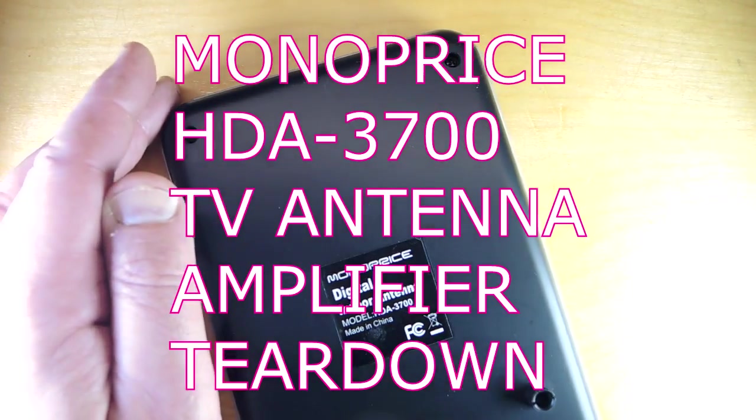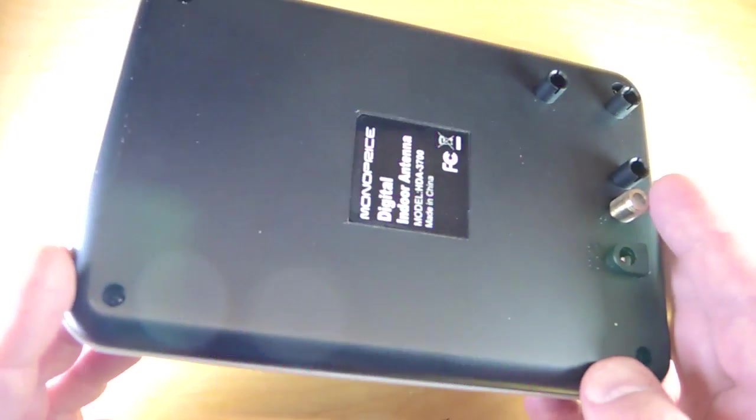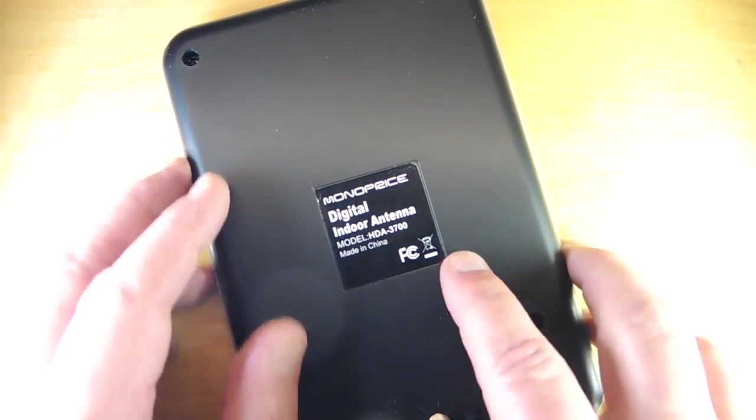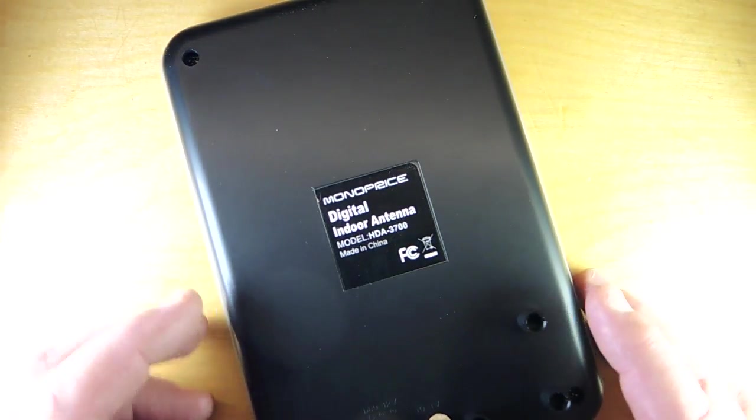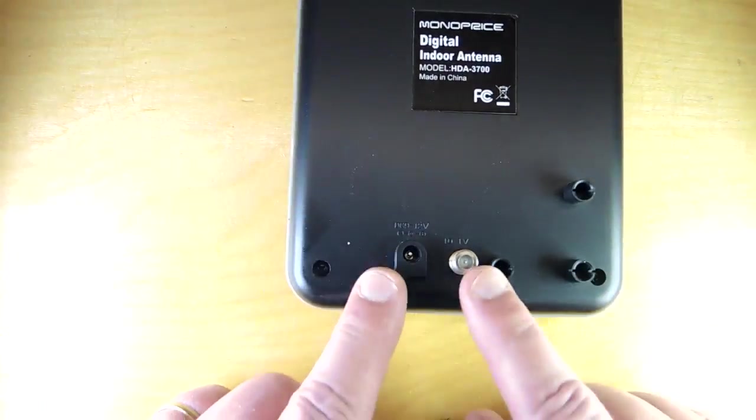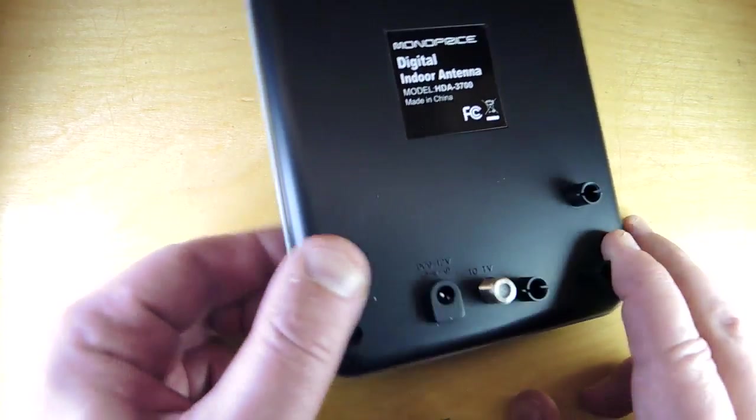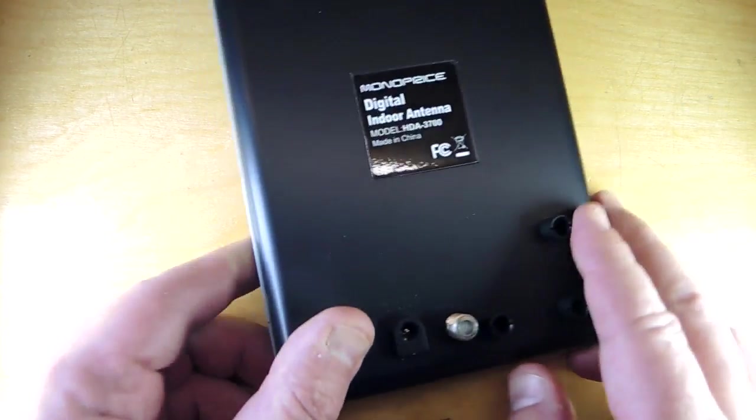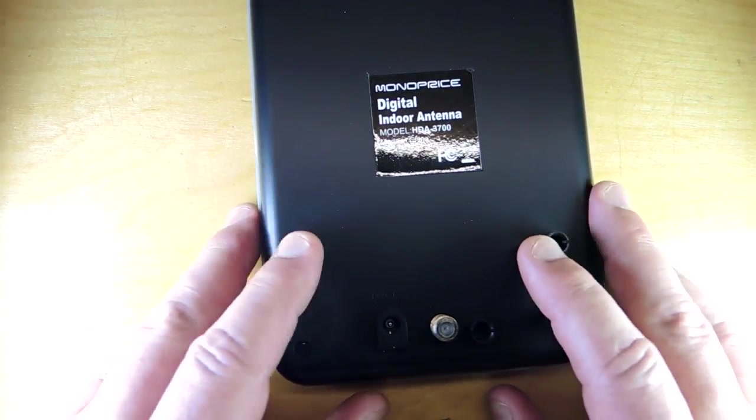Teardown time. This is an antenna for receiving terrestrial television. It is, in fact, an active antenna. It's the Monoprice HDA3700. And that's the first interesting thing. There's a power input coming into it and, of course, the antenna back to the TV set. So it means there has to be some sort of amplifier in this product.